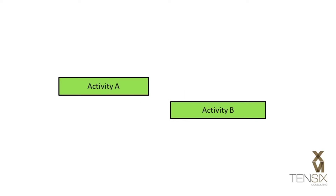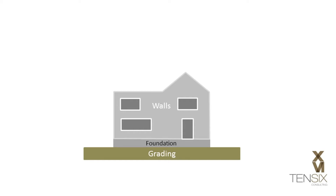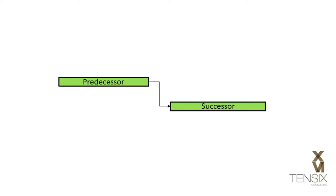In P6, a relationship refers to a link between two activities. This link describes the logical flow of work between tasks. For example, in building a house, the roofing cannot start until the walls are finished. P6 uses the terms predecessor and successor to describe the relationship between two activities.